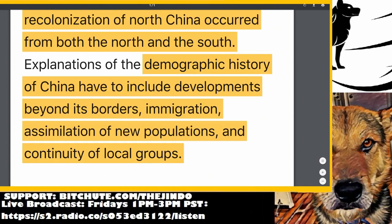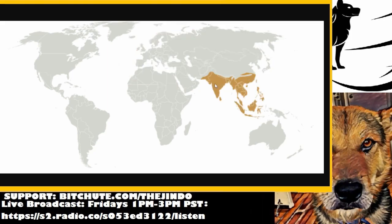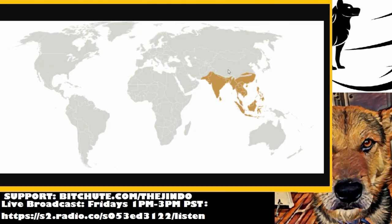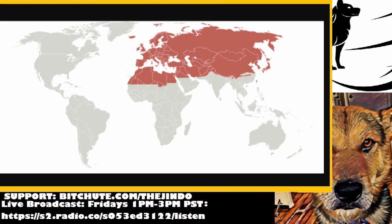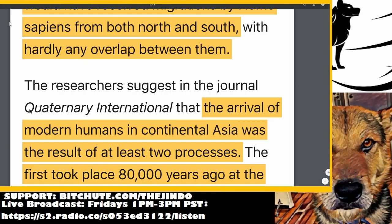Recolonization of North China happened from both North and South. As soon as this area opened up, the people in the South — who were already thriving — moved up, and then people in the North moved down into it. That makes a lot of sense. Even now, if you look at China, the customs are different between North and South. It's very interesting how these two populations from different biogeographical zones influenced culture all the way to this day.